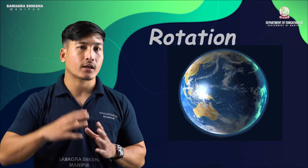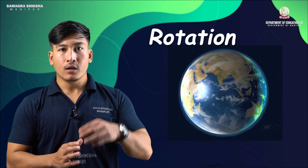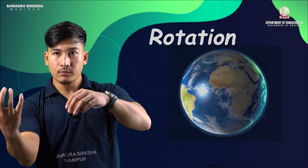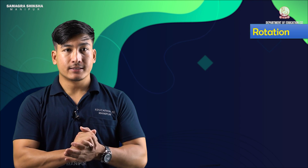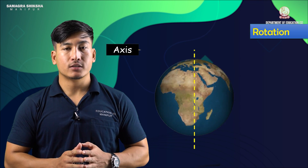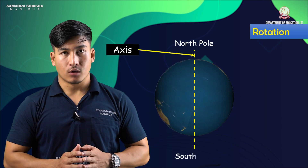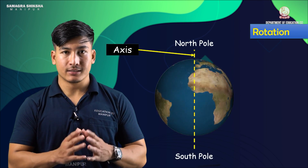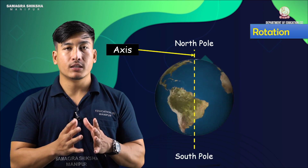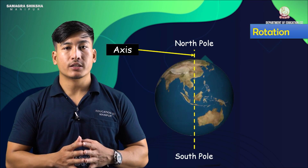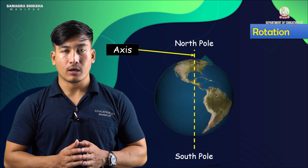The spinning on its axis is called rotation. The imaginary line passes through the center of the earth. The earth spins on its axis just like a spinning top.